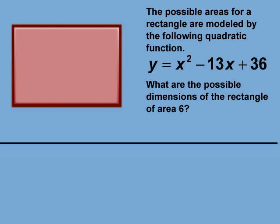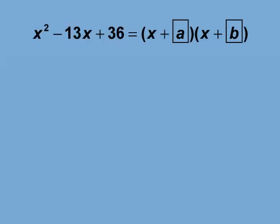We can rewrite the area equation to have a value of 6 this way, but we want the left side of the equation to look like the product of two binomials as shown here. If we can find values for a and b, then we can find dimensions for the rectangle.